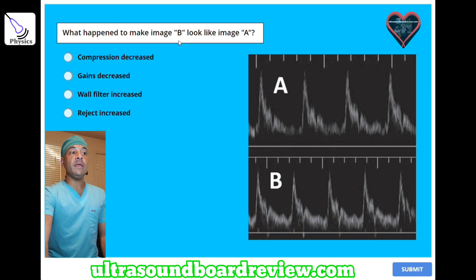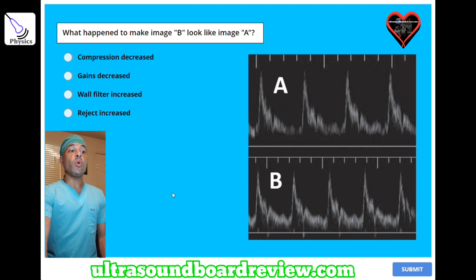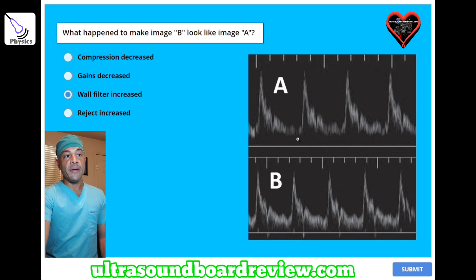What happened to make image B look like image A? A) compression decreased, B) gains decreased, C) wall filter increased, or D) reject increased? The answer is C, wall filter increased, because when you increase your wall filter, it creates a gap right near the baseline.